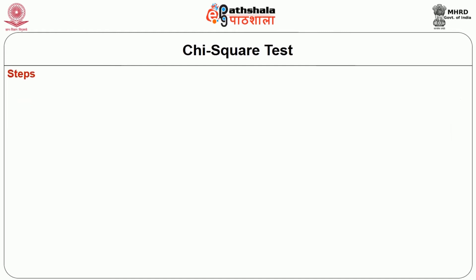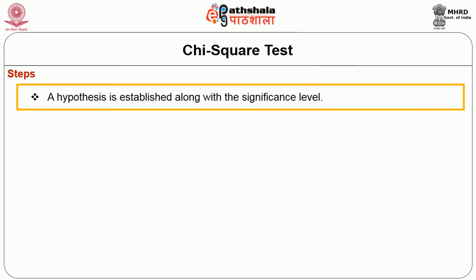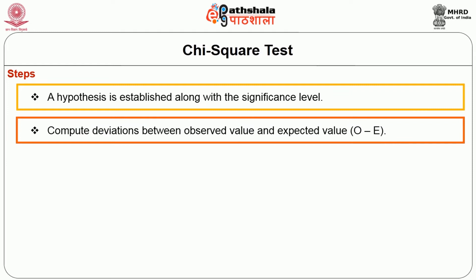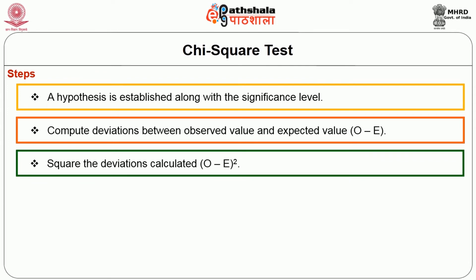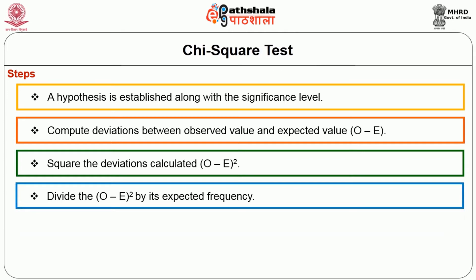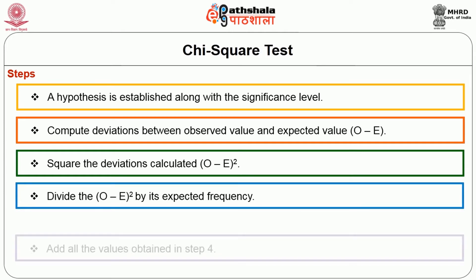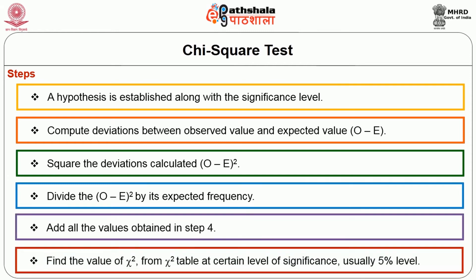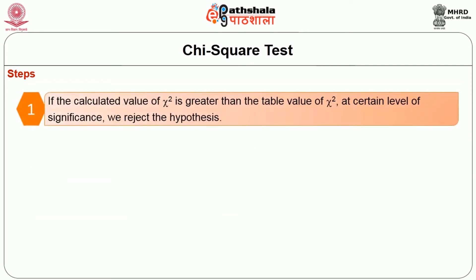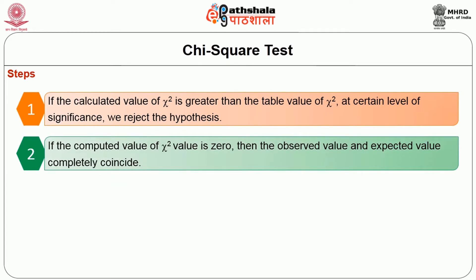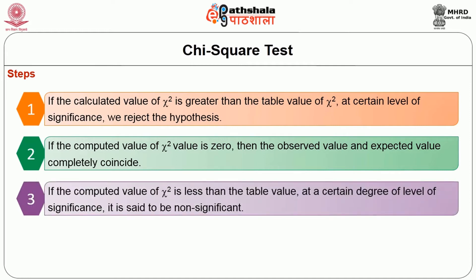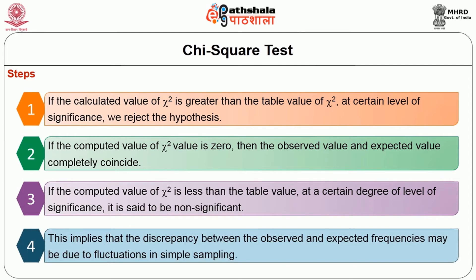Steps in the chi-square test: First, establish a hypothesis along with a significance level. Second, compute deviations between observed and expected values. Third, square the deviations, that is (O − E)². Fourth, divide (O − E)² by the expected frequency E. Fifth, add all values obtained. Then find the chi-square table value at a certain level of significance, usually 5%. If the calculated value is greater than the table value, reject the hypothesis. If the computed value is zero, observed and expected values completely coincide. If the computed value is less than the table value, it is non-significant, implying discrepancy may be due to fluctuations in sampling.